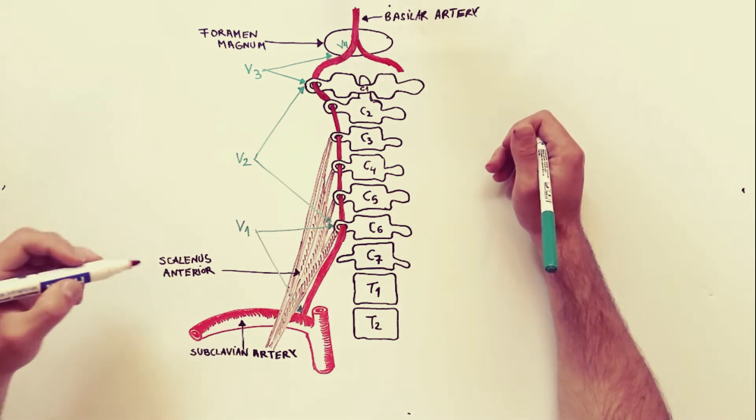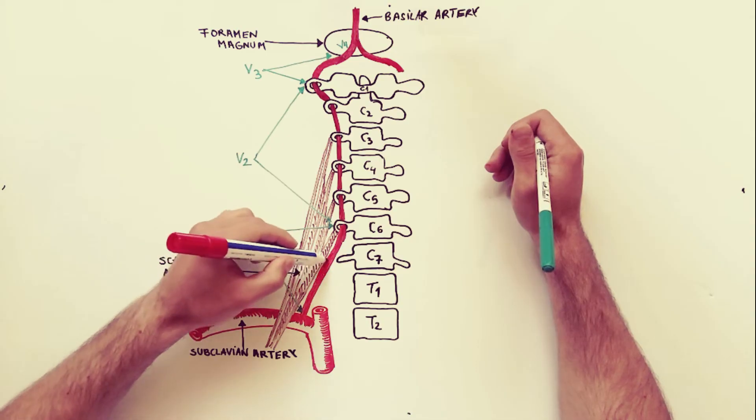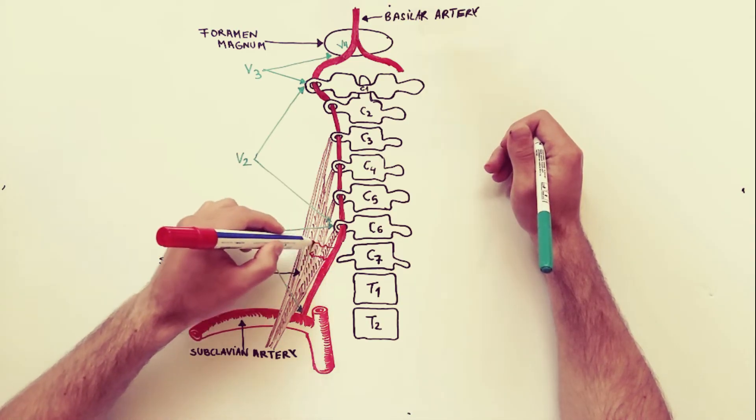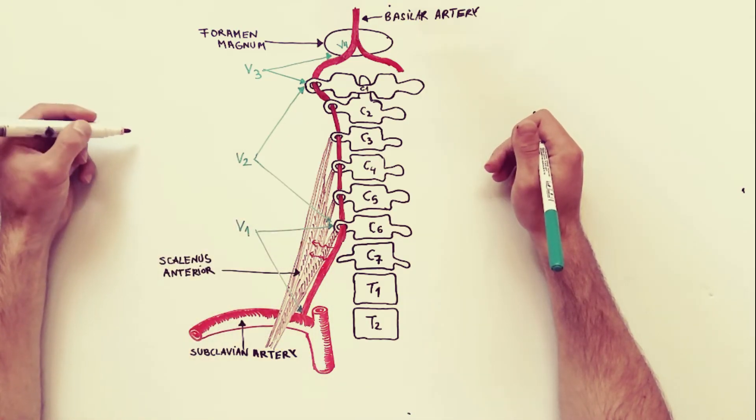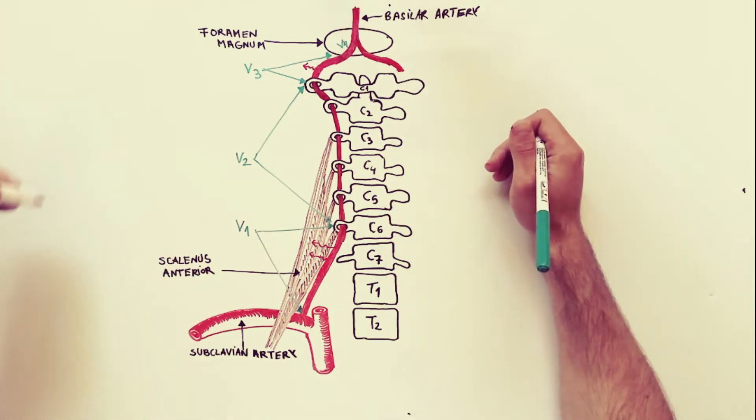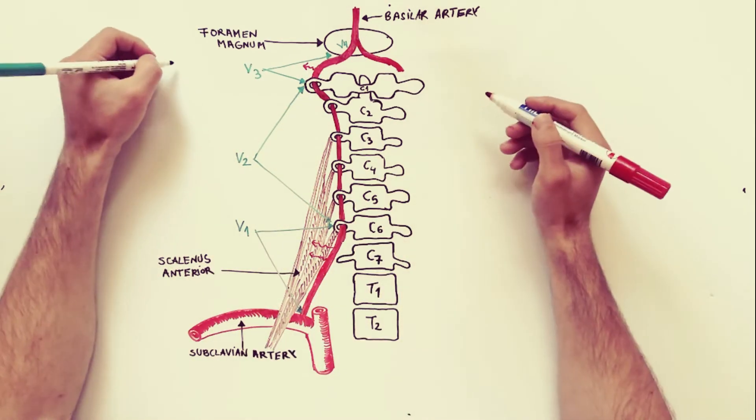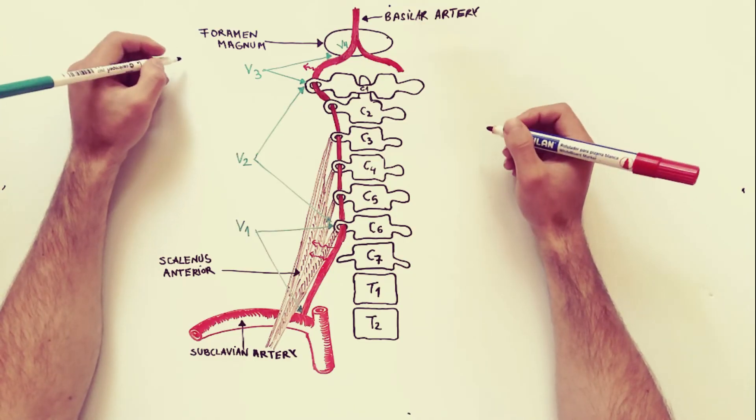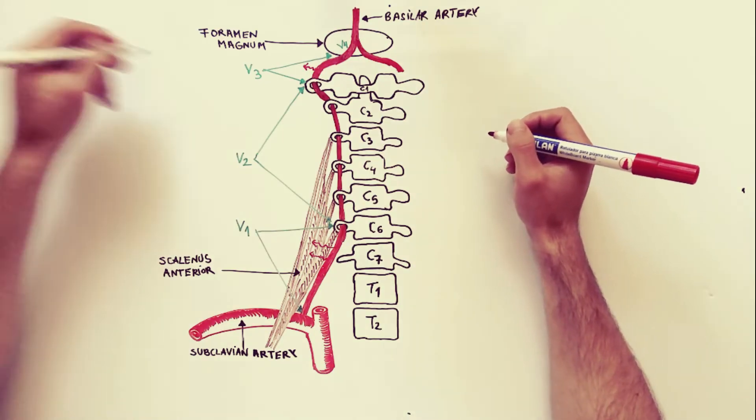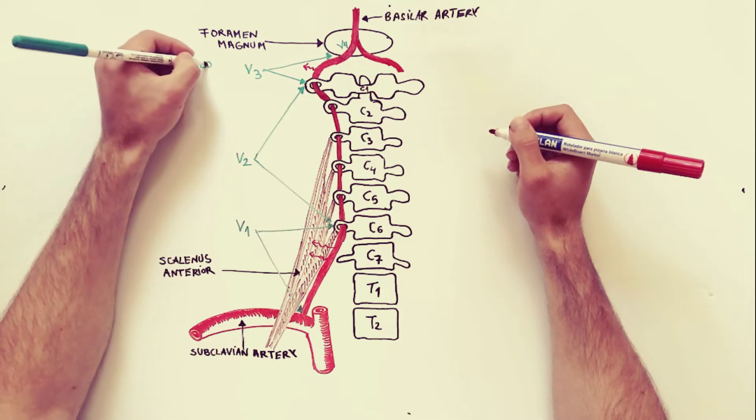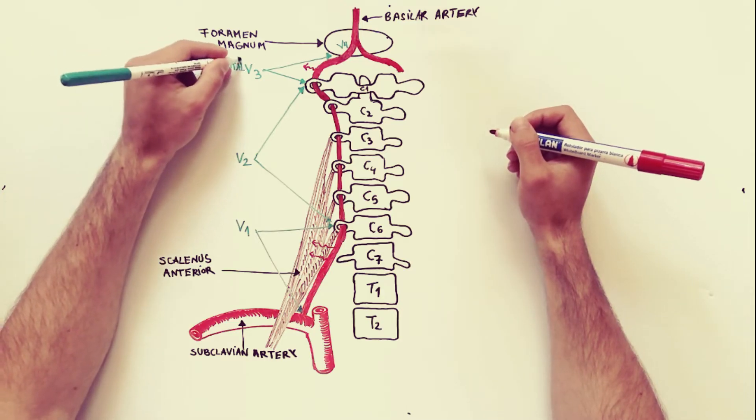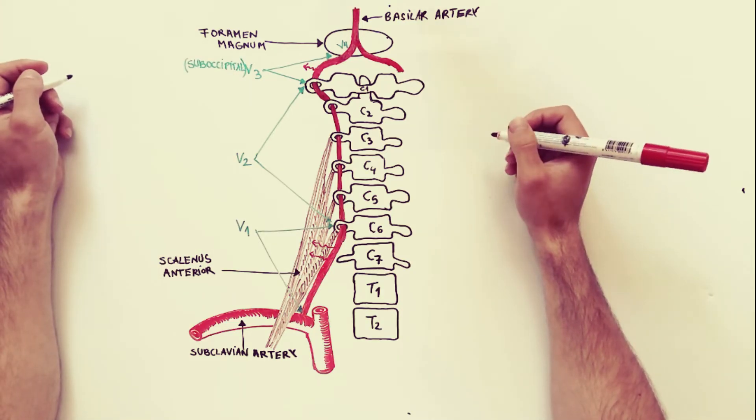Now, we will discuss about the branches of the vertebral artery. The muscular branches arise from the first and third parts of the vertebral artery. Those from the first part supply deep muscles of the neck, and those from the third part, or the suboccipital part, supply the muscles of the suboccipital triangle.